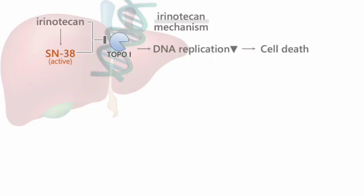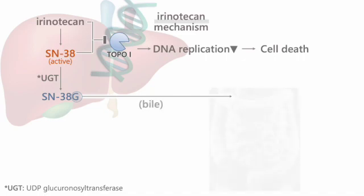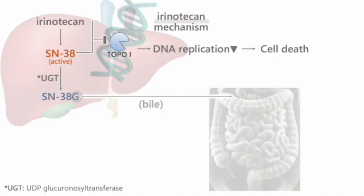After that, SN38 is conjugated to SN38 glucuronic acid and detoxified in the liver. Then it is sent into the intestines, primarily through bile, to be removed from the body.